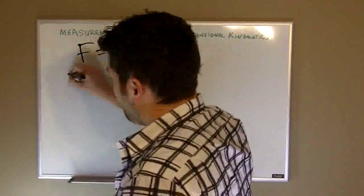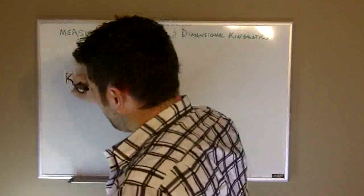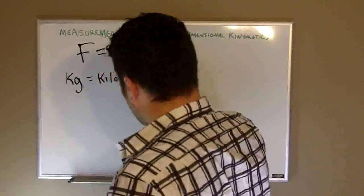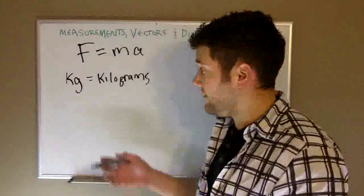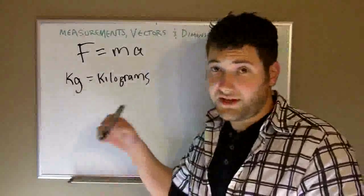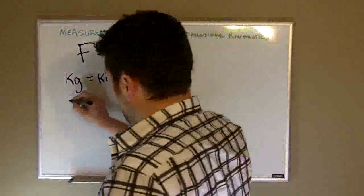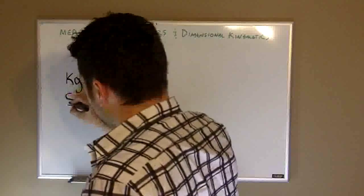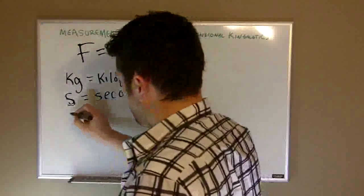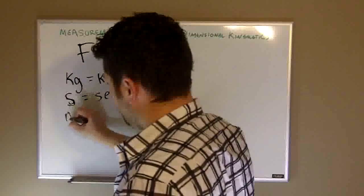When we're dealing with weight, we want to use kilograms. So that's going to be our standard unit that we're going to use for weight. You want to convert everything into kilograms, not grams, not all this other stuff, but just kilograms. And for time, we're going to use seconds. For distance, we're going to use meters.